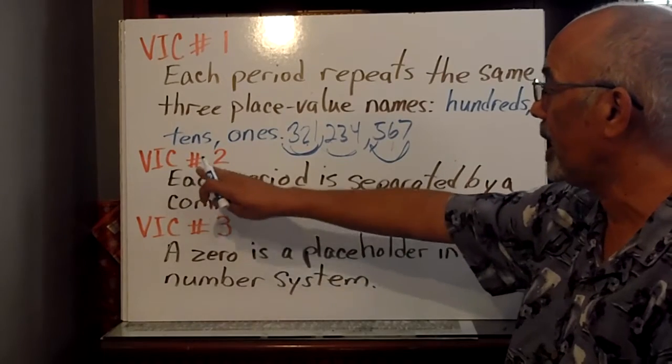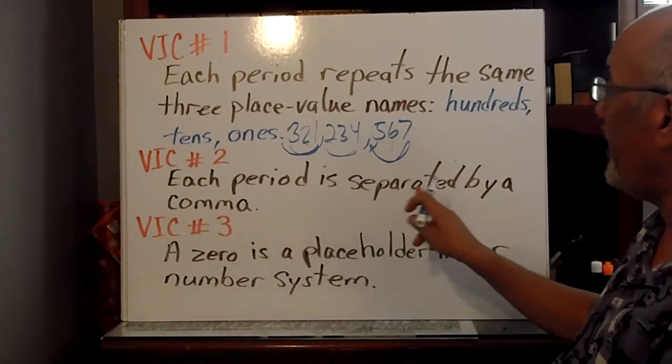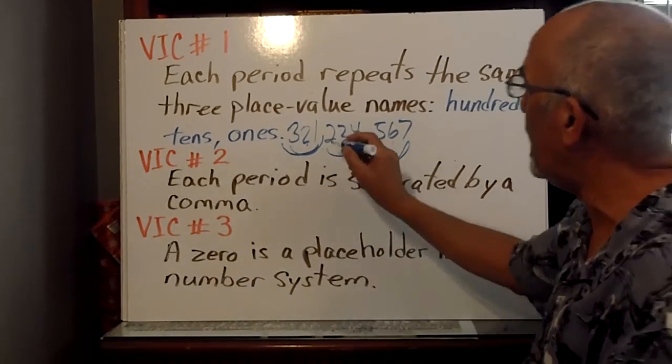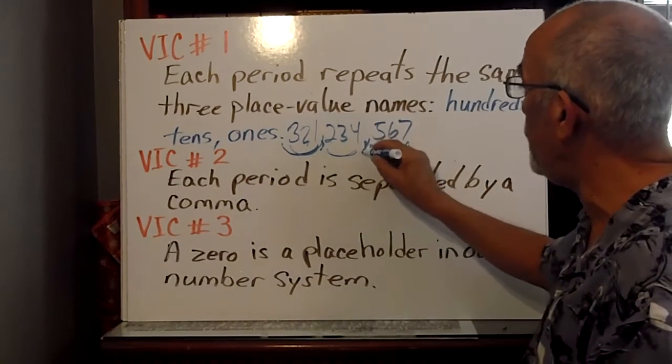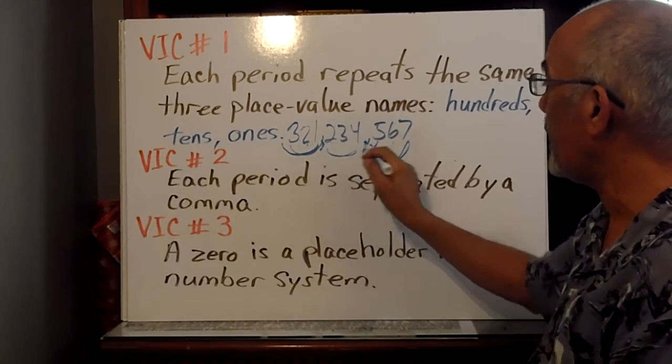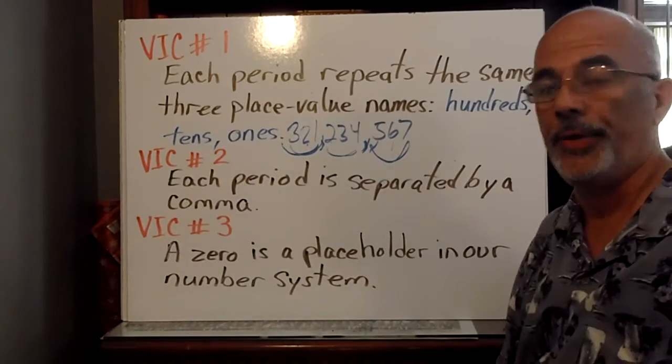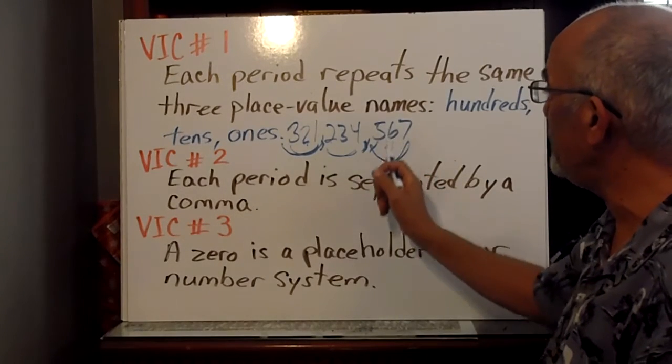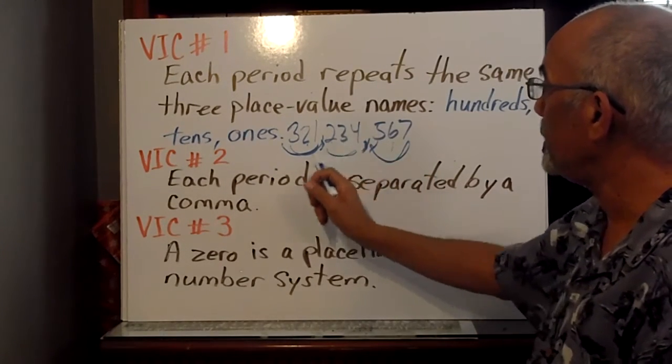Second very important concept is a period is always separated by a comma. Here we go. Every time we get one of these commas, in between is a period. This is your ones period, thousands, millions.